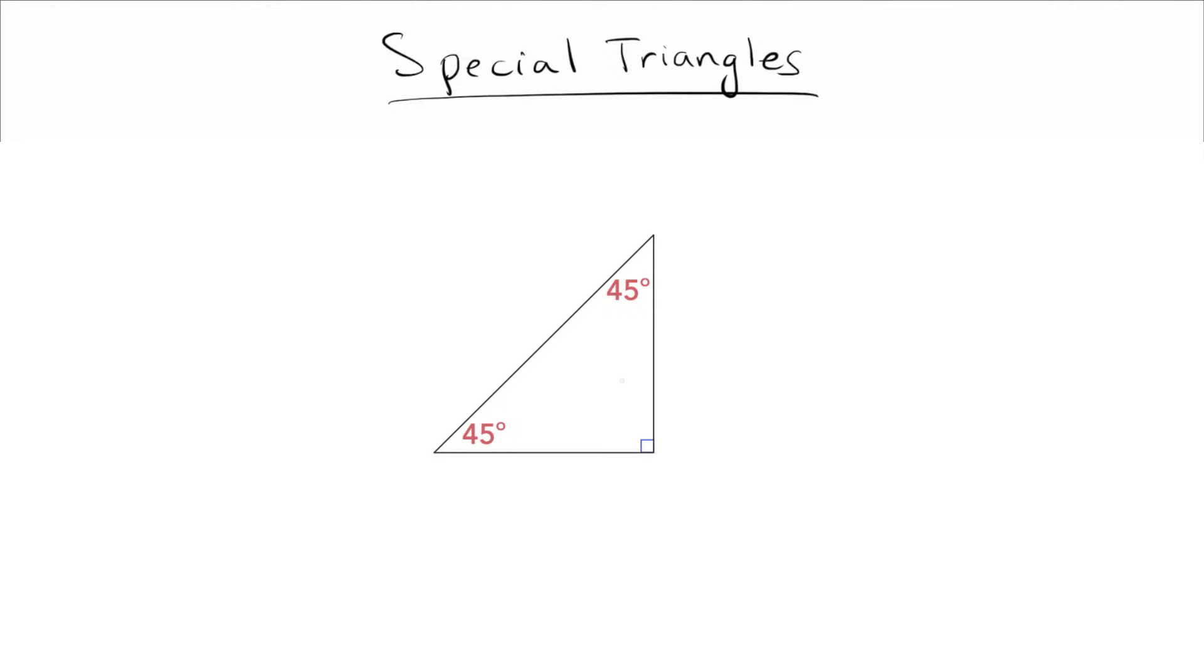And those are the 45-45-90 triangle and the 30-60-90 triangle. Okay, so on these two triangles, we need to memorize what the sides are. And the sides for the 45-45-90 are 1, 1, square root of 2. And for the 30-60-90, it's 1, 2, square root of 3.